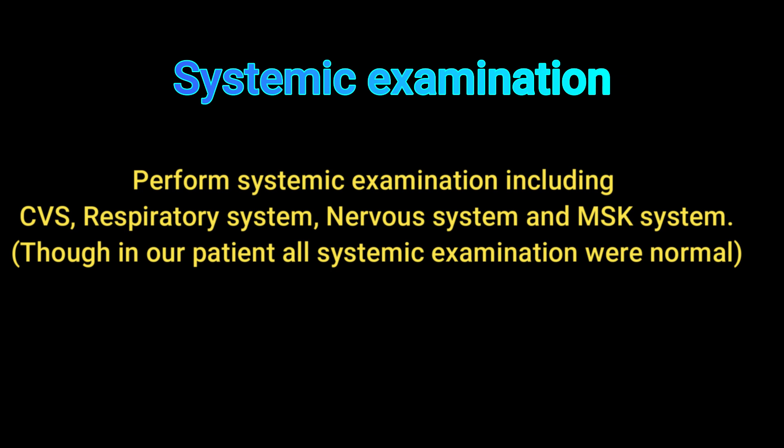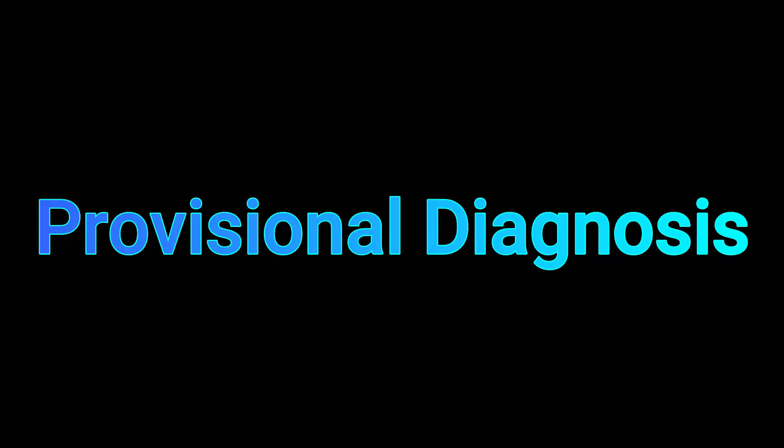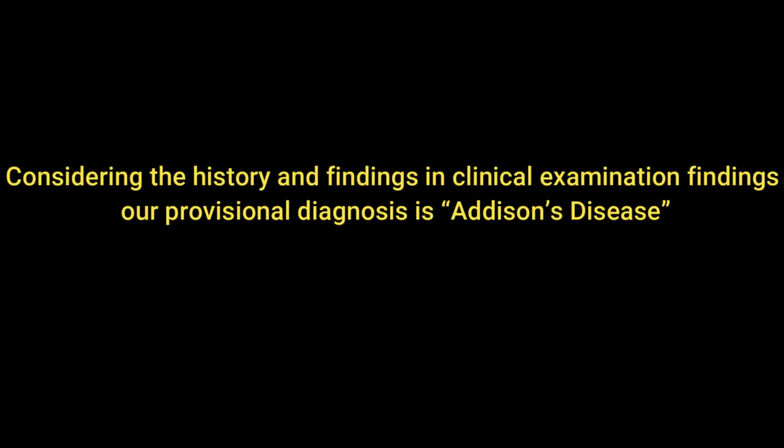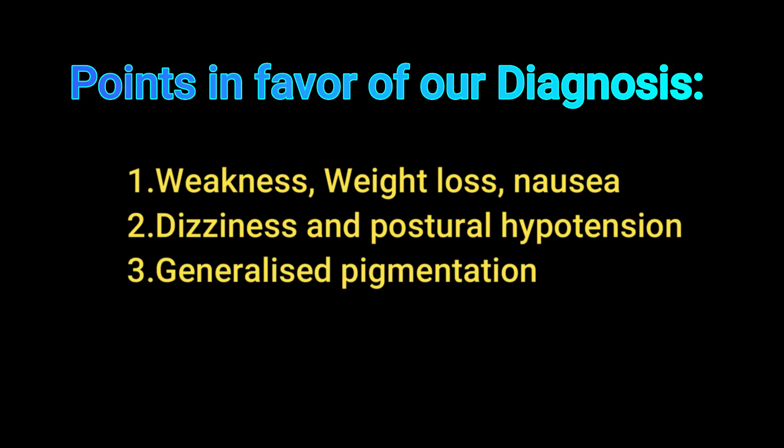Other findings in general examination were normal. Systemic examination including cardiovascular, respiratory, nervous, and musculoskeletal systems was also normal. Considering the history and physical findings, our provisional diagnosis is Addison's disease. Points in favor: weakness, weight loss, and nausea; dizziness and postural hypotension; and generalized pigmentation.